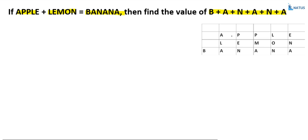Here, APPLE is a 5-digit number and LEMON is also a 5-digit number. You are adding 2 numbers and the result is a 6-digit number. As we already discussed in the rules of Crypto Arithmetic: if the sum of two N-digit numbers equals an N+1 digit number, then the leftmost digit must equal 1. So the value of B is equal to 1.